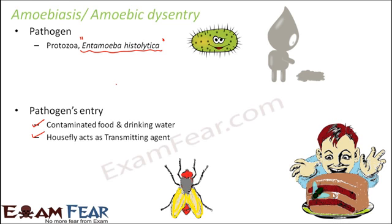The food becomes contaminated. When this person eats that food, it actually has the pathogen in it and as a result the person will get infected with Entamoeba histolytica. This transmission can take place not only through drinking water and food, but also through dirty hands, objects, or anal-oral contact, because this type of pathogen is mostly found in the faeces.